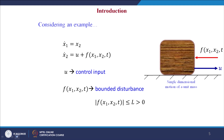Considering an example of single dimensional motion of a unit mass as shown in the figure, which is pulled by the control input force and resisted by the disturbance force, given by the term F(x₁, x₂, t), where the disturbance is a bounded disturbance including the viscous friction force as well as the unknown rigid forces associated with this mass.